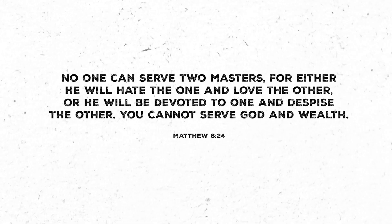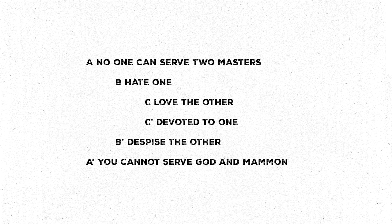Or take Matthew 6:24, where Jesus is talking about wealth and makes that well-known statement: 'No one can serve two masters, for either he will hate the one and love the other, or he will be devoted to one and despise the other. You cannot serve God and wealth.' Once again we have a sequence of elements repeated in reverse order. This example also shows that the author doesn't always repeat the exact same thing in the second sequence, but sometimes uses synonyms or similar ideas — in the first sequence he says 'hate and love,' but in the second, 'be devoted to and despise.' So when you're looking for a chiastic structure, don't just look for exact repetition of words or phrases, but also for similar words or concepts.